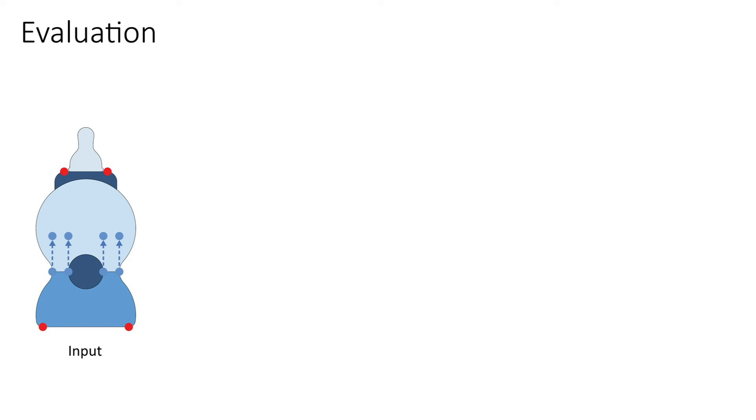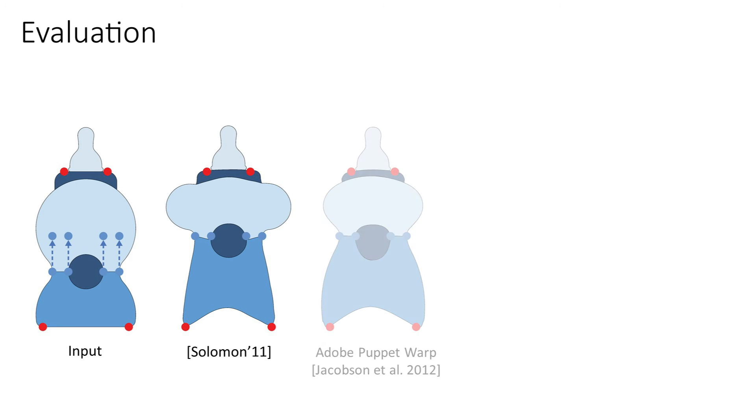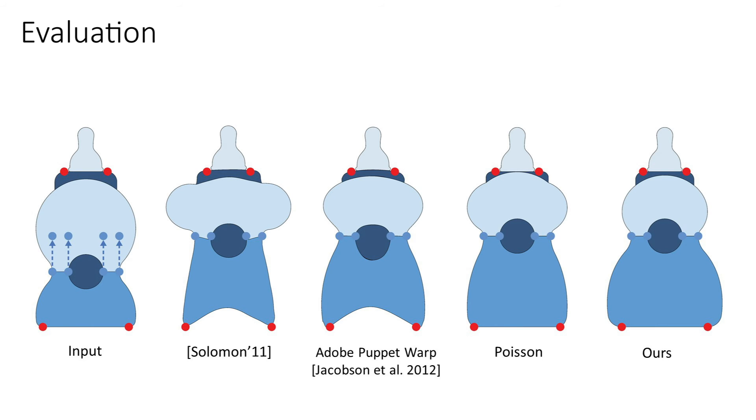We validate our ALUP reshaping method via qualitative studies comparing our results to both those created via algorithmic alternatives and manually generated ones, and by two comparative user studies.